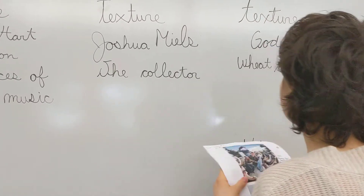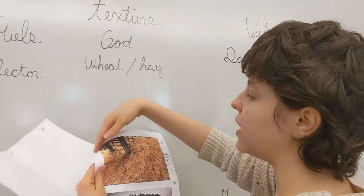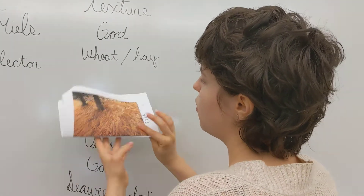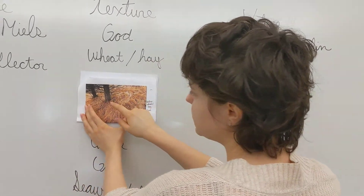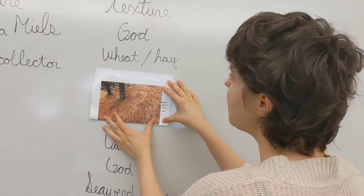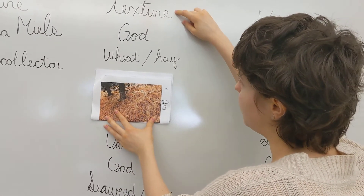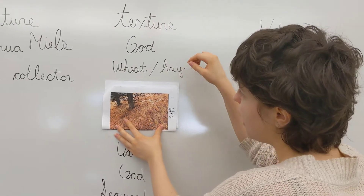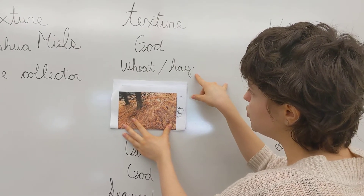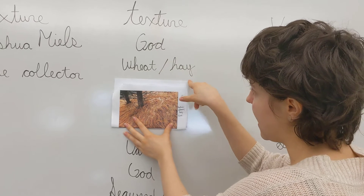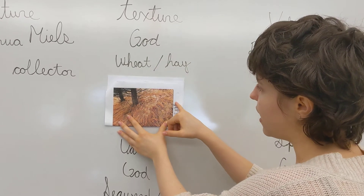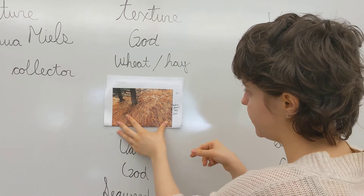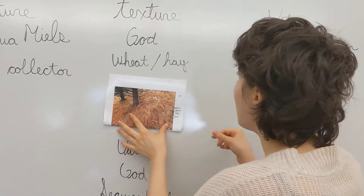All right. Now, if you turn the page over, we're going to be dealing with the wheat one, the one with the hay. It's dealing with the element of texture. The wheat is created by God. Write either "wheat slash hay" on the side — wheat slash hay because it's either one, really.